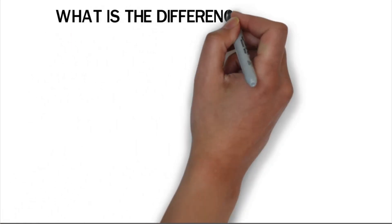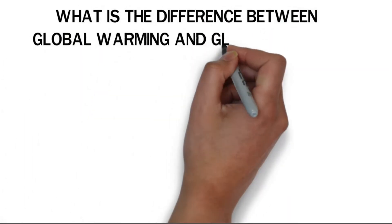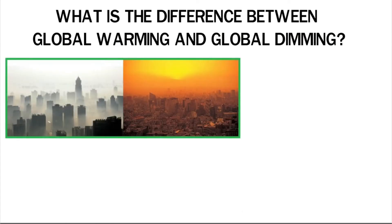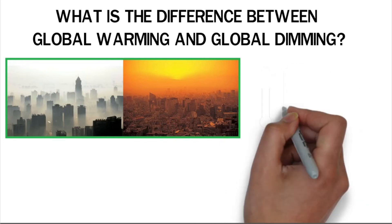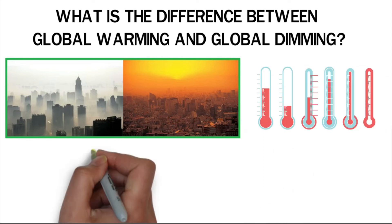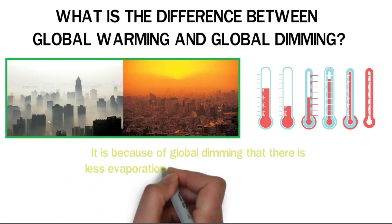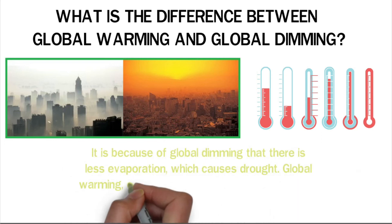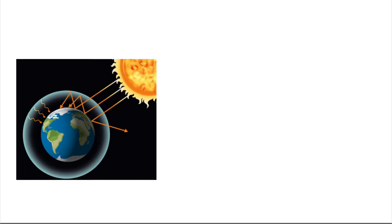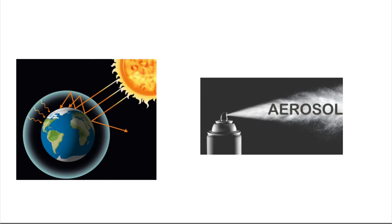What is the difference between global warming and global dimming? Both global warming and global dimming have bad effects on the world. However, these two processes are not the same. Global dimming cools things down, while global warming raises the temperature. It is because of global dimming that there is less evaporation, which causes drought. Global warming, on the other hand, can lead to more rain because it speeds up the process of evapotranspiration. Global warming is caused by the greenhouse effect, and global dimming is caused by the buildup of aerosols.